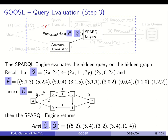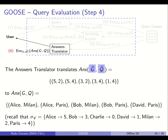The answer set consists of tuples of integers because nodes were mapped to integers. These hidden query answers are sent to the answers translator, which uses the node bijection from the data owner to unhide the actual answers. For example, the tuple (5,2) is translated to Alice-Milan. So the user receives the real answers to her query.